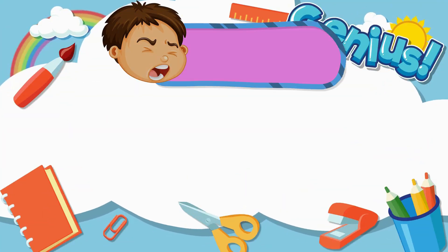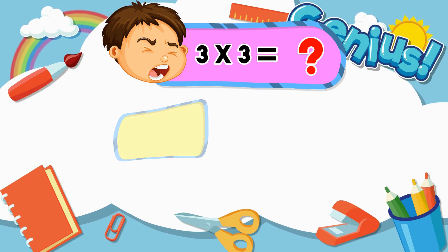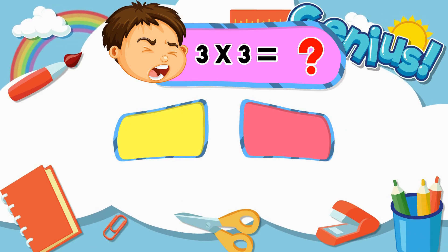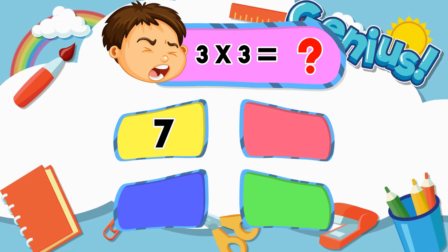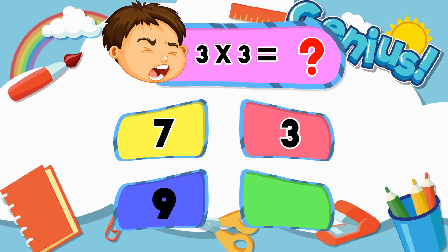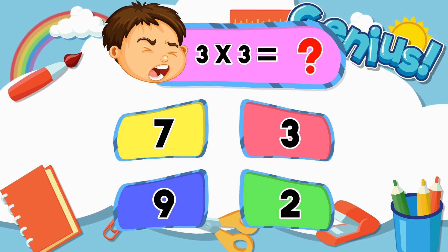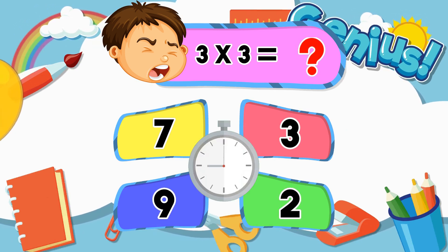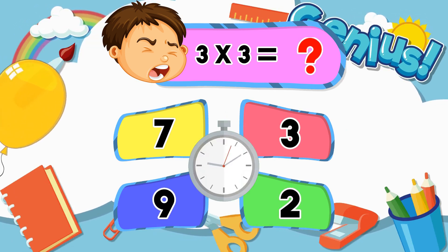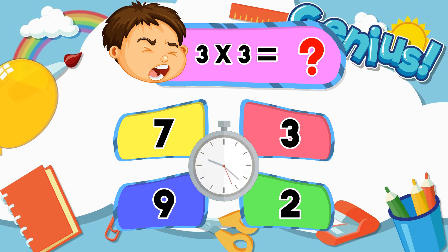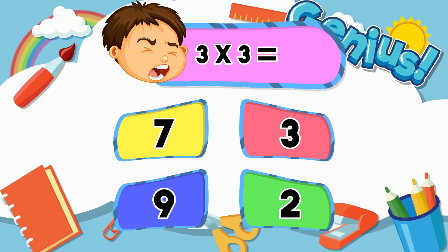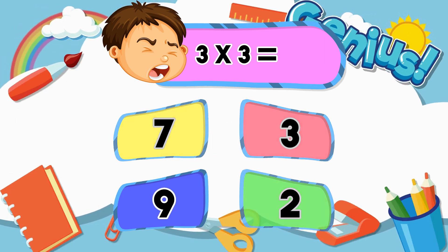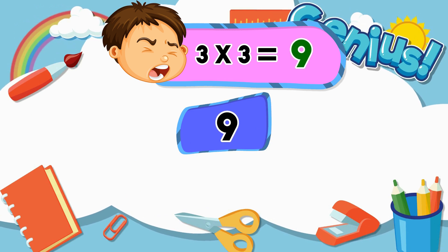What is 3 times 3? 30, 7, 3, 9, 2. Answer: 9.